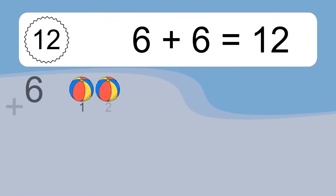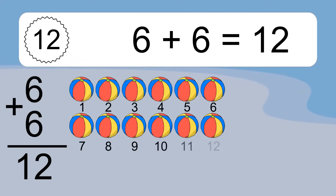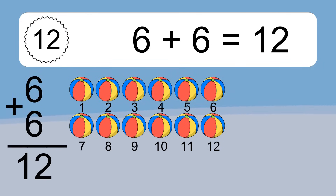6 plus 6 equals what? 6 plus 6 equals 12. Let's count it: 1, 2, 3, 4, 5, 6, 7, 8, 9, 10, 11, 12.